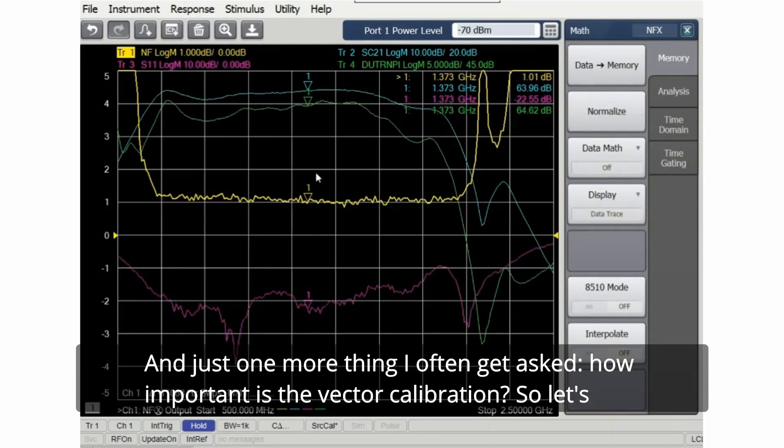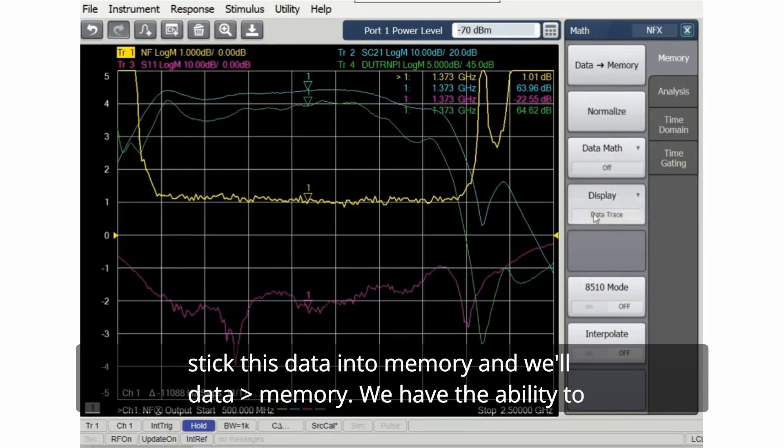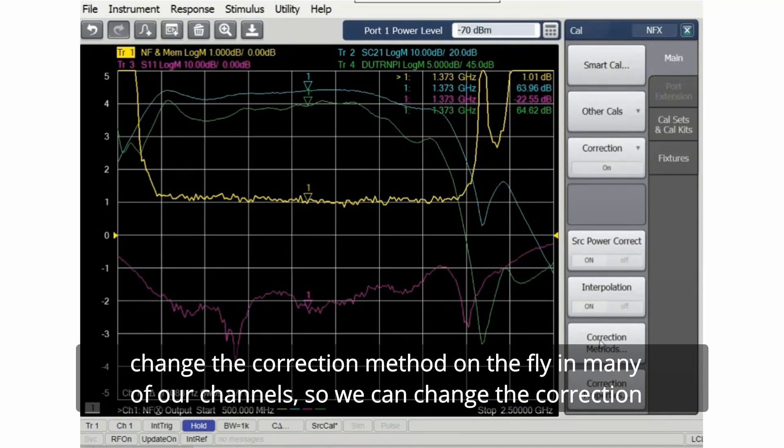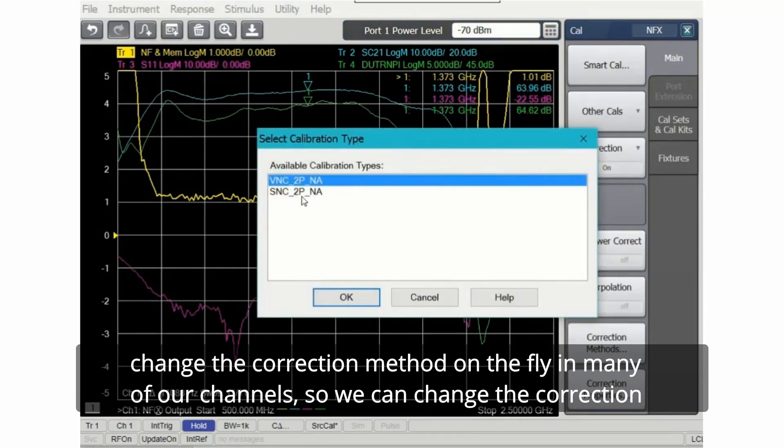And just one more thing I often get asked: how important is the vector calibration? So let's stick this data into memory. In data and memory we have the ability to change the correction method on the fly in many of our channels.